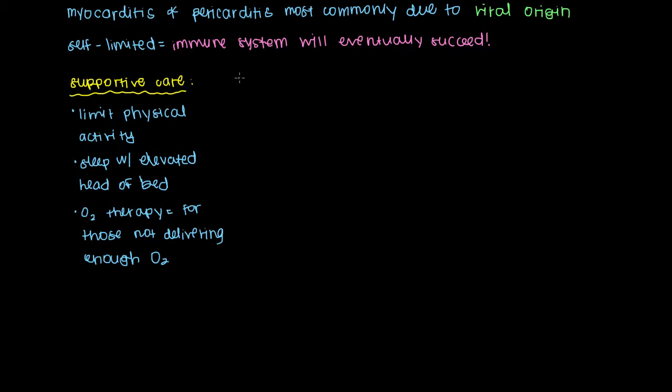The next level up of treatments we can provide are certain medications. The first one I'll mention are antibiotics. You only give antibiotics if your myocarditis or pericarditis is from non-viral causes. You never give antibiotics for viral myocarditis or viral pericarditis. There's no point to do it and instead you're increasing resistance. You don't want to give antibiotics for viral causes.